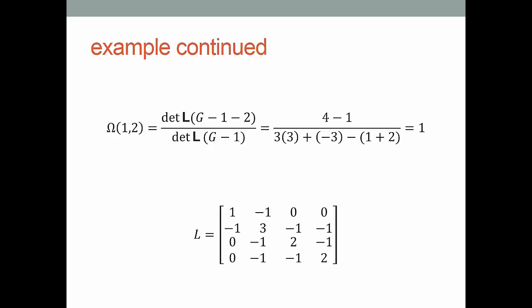So nine minus three is six minus another three is three. So we have three over three. Or the distance, the resistance distance from one to two in our example turns out to be exactly one.